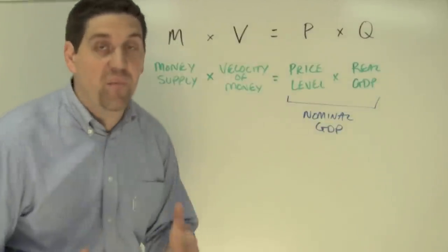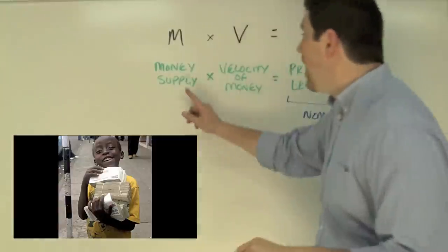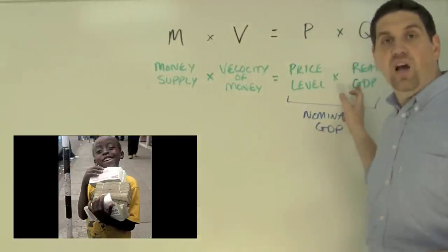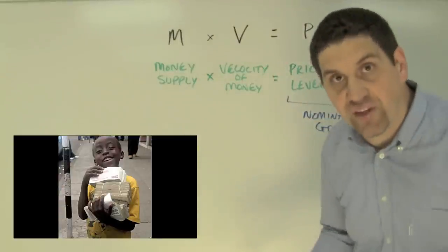This is the equation that the government of Zimbabwe didn't understand. If the government keeps printing out money, producing more and more money to pay for its debts, that doesn't mean we're going to produce more stuff. It just means we're going to have higher and higher price level or hyperinflation.